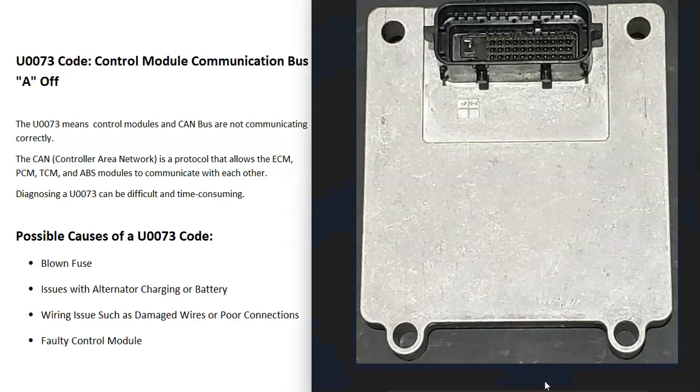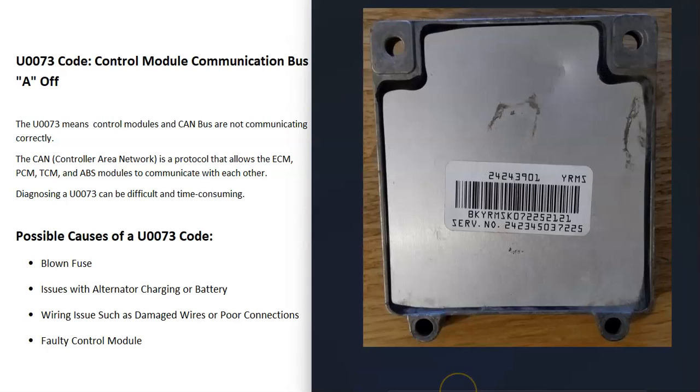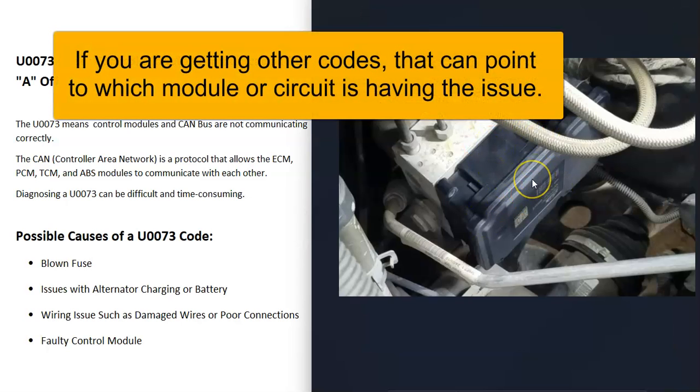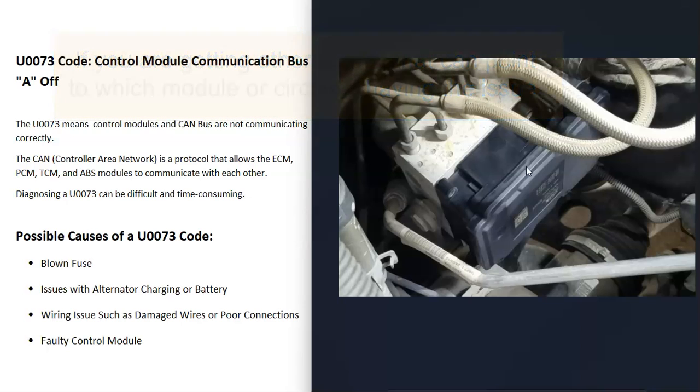Modern vehicles can have multiple computer modules in them. They can have the ECM, which is the engine control module, a TCM which is the transmission control module, and an ABS module for the brakes. All these different computer modules need to talk to each other and back to the main computer in order for the vehicle to keep running properly.